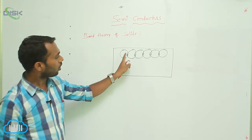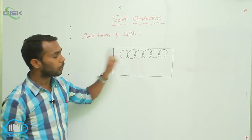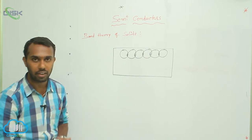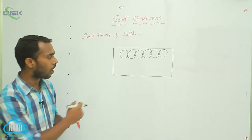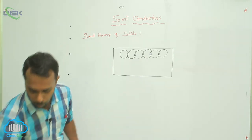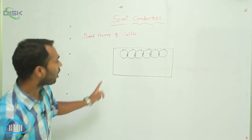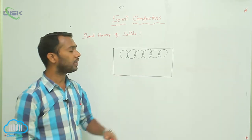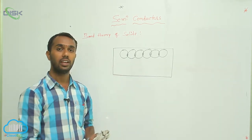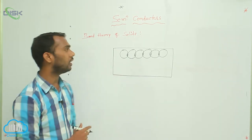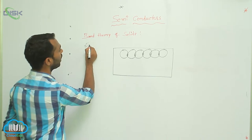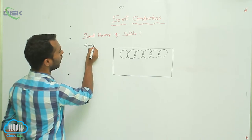If interlocking of atoms takes place, what happens? That gives an energy band. Interlocking of atoms gives an energy band.